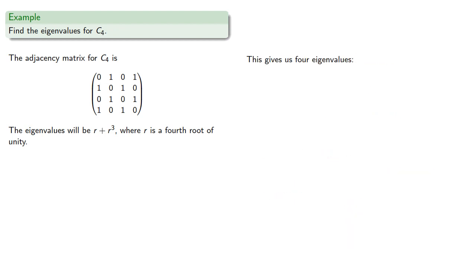And this gives us four eigenvalues: 2, negative 2, 0, and 0, and four linearly independent eigenvectors.